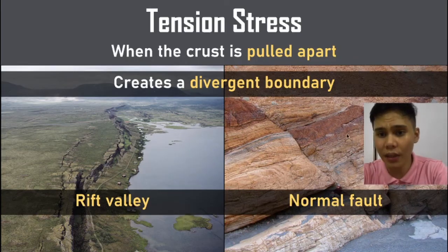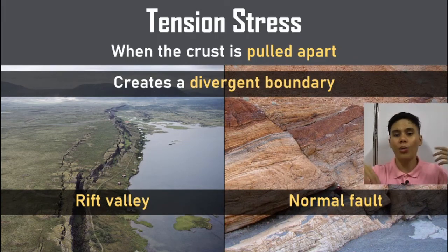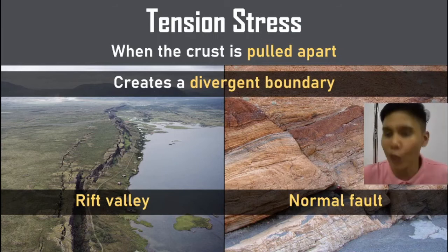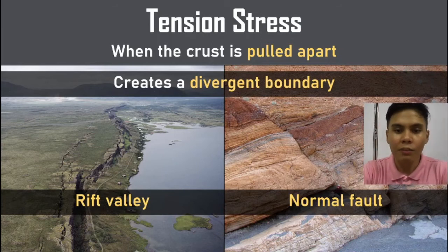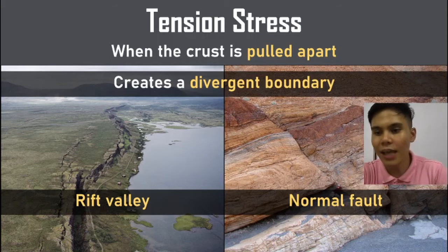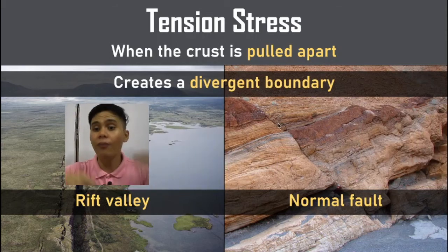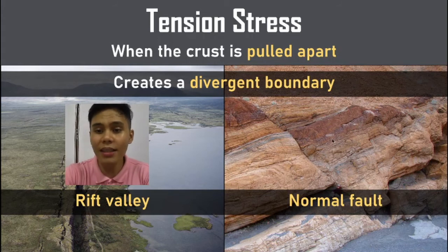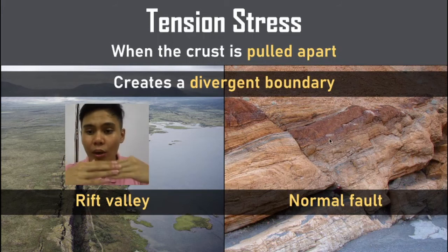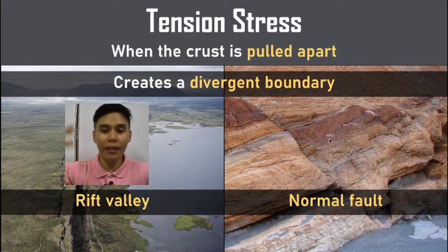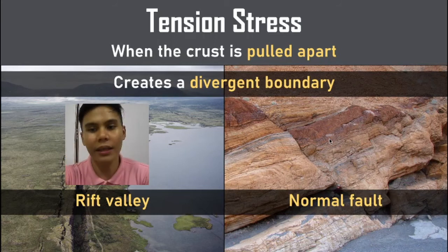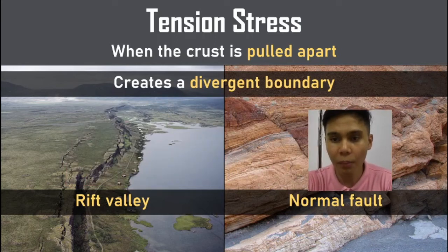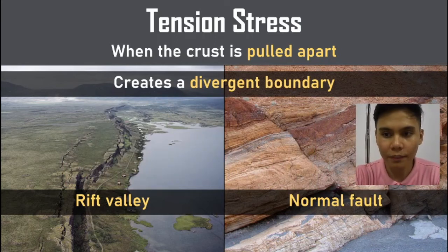Tension stress, on the other hand, is when the crust is pulled apart, creating a divergent boundary — they're moving apart. Rift valleys are a very big example of this, and normal faults are the fault lines at divergent boundaries. You can see here that instead of being pushed above another layer, this one is being pulled beneath the other layer. That's a normal fault.